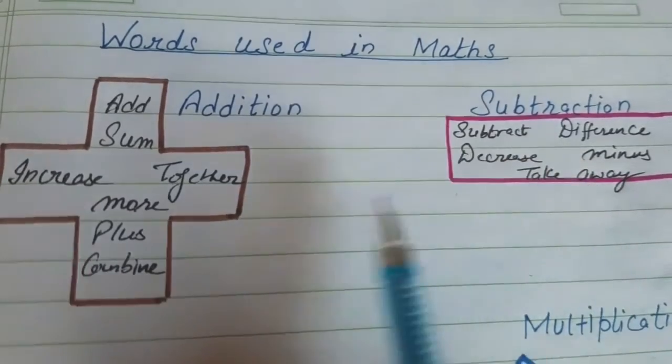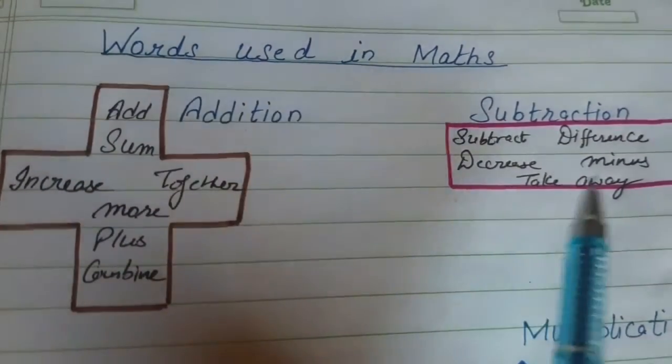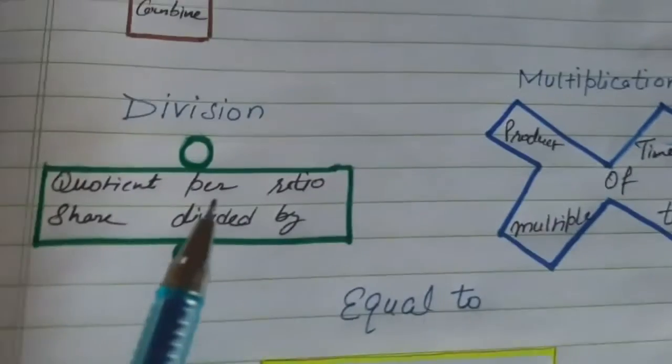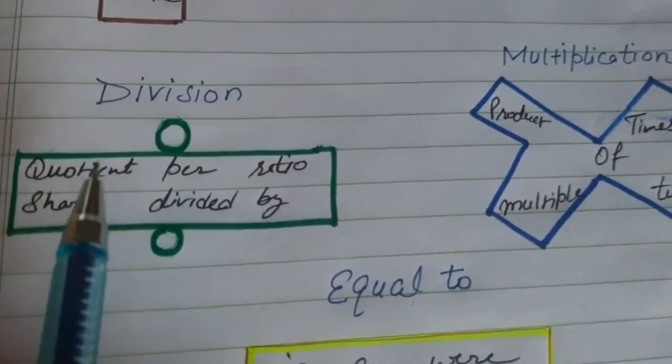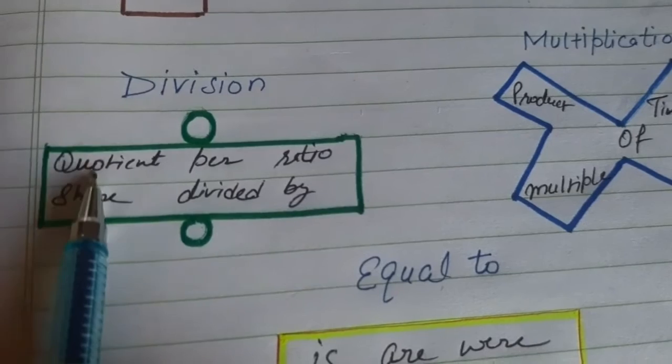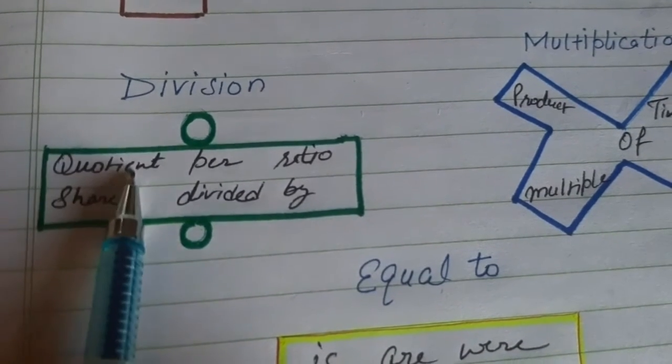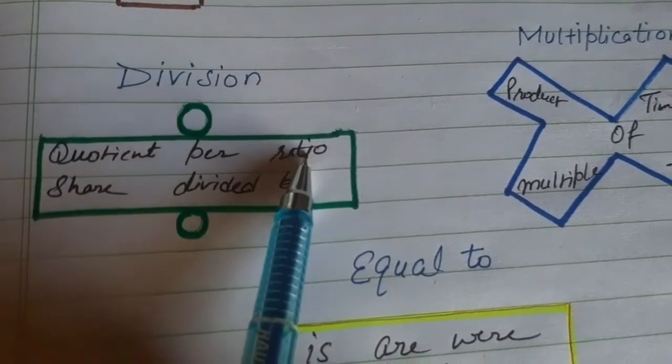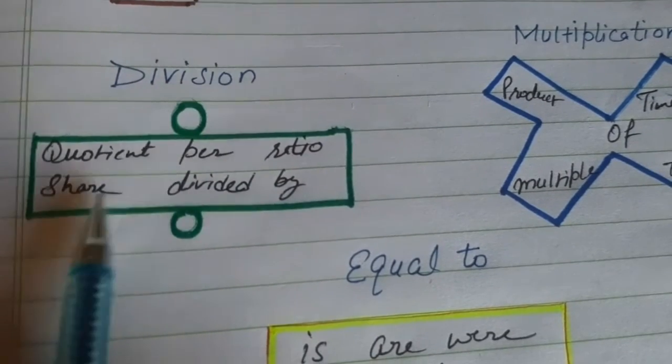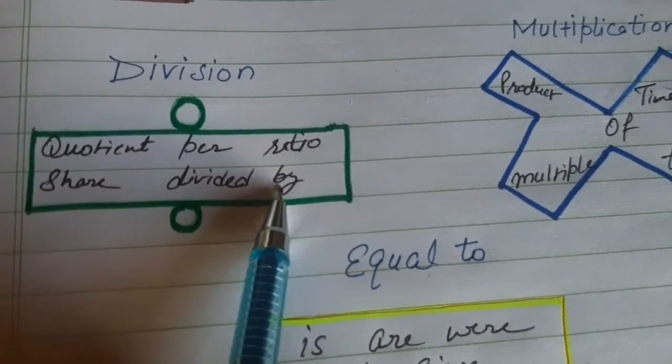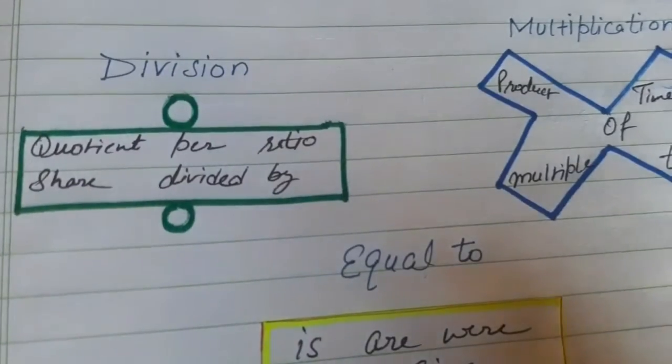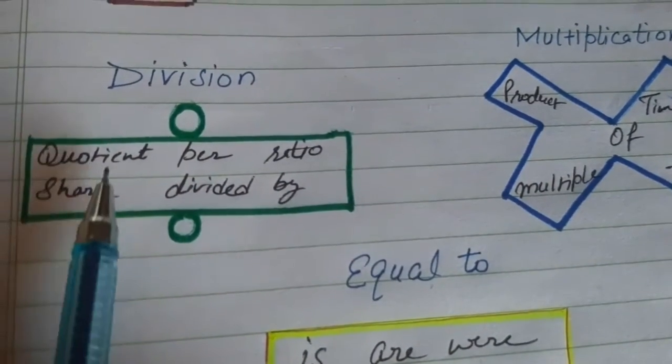These are the basic key words for addition and subtraction. Then comes division and multiplication. In division we basically use quotient, per, ratio, shared, divided by, or divide this number into this number. So these are the basic key words.